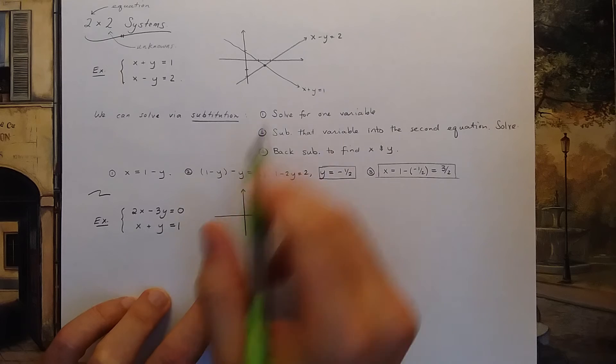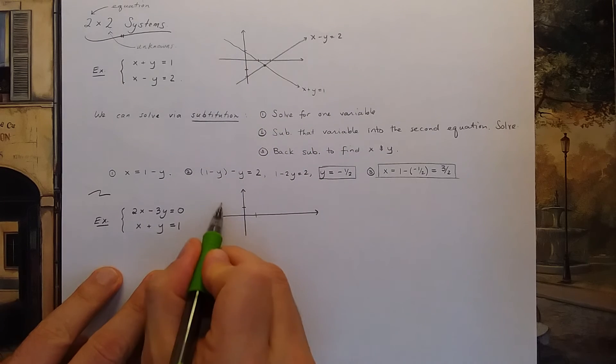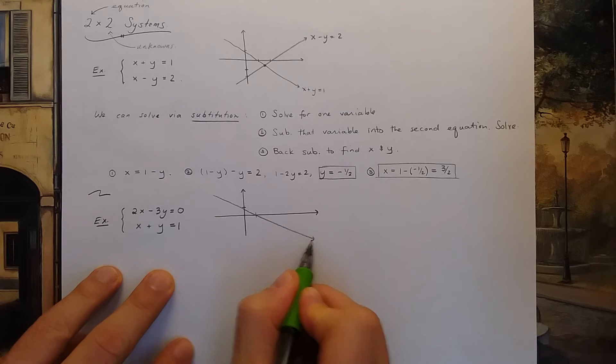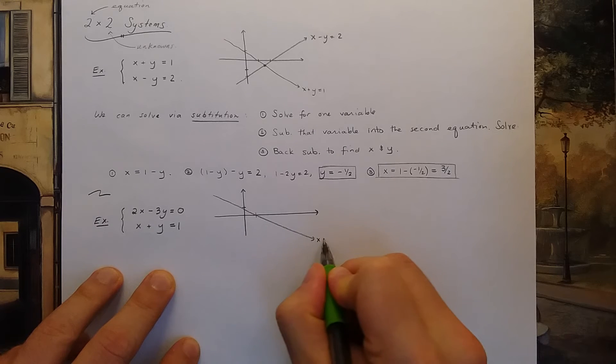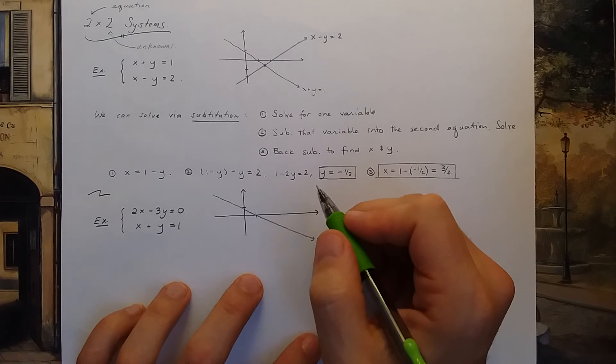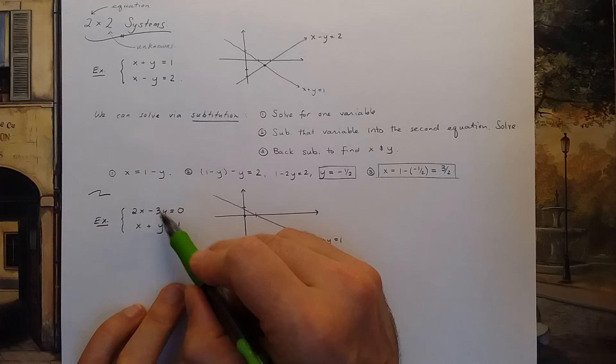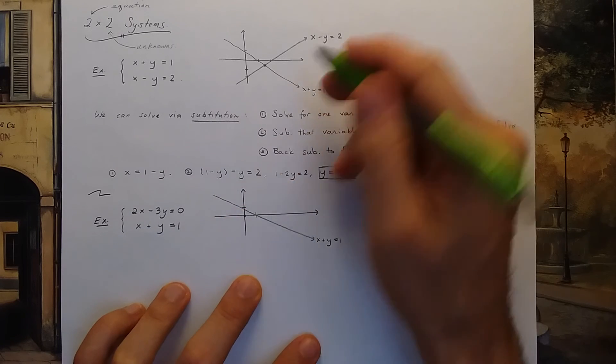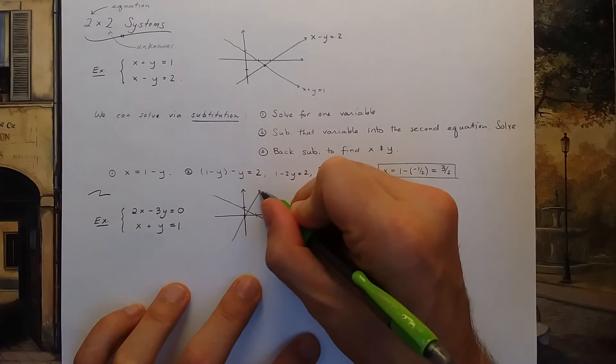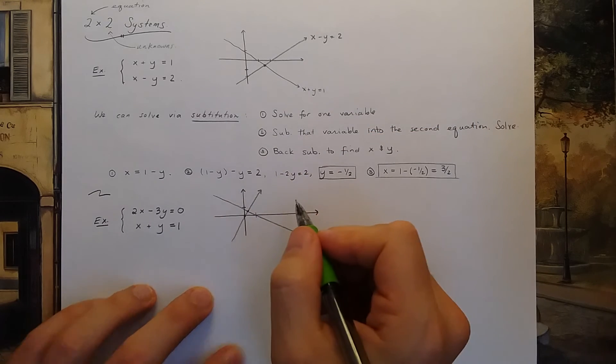We could plot the two lines and see where they intersect. So one line, I guess one line is the same line I had before. One line goes down like this. So there's x plus y equals 1. And the other line will cross through 0, 0, because I see if x and y are both 0, this equation is true, and go up at a certain slope. So it goes up like this. So we're looking for the coordinate that crosses both of these lines.